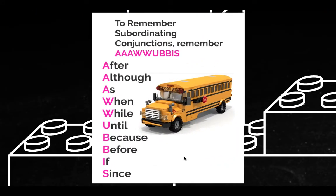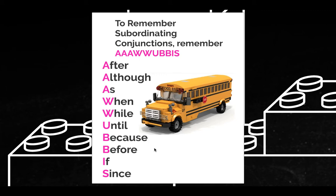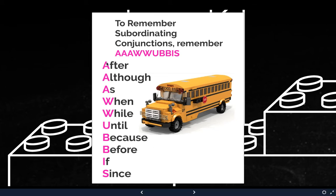To help remember some of the most common subordinating conjunctions, think of AWOOBUS — three A's, two W's, a U, two B's, an I, and an S. It stands for: after, although, as, when, while, until, because, before, if, and since. If you add any of these words in front of an independent clause, it makes a dependent clause. So if you see these words in a sentence, this is probably the start of a dependent clause.